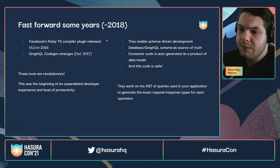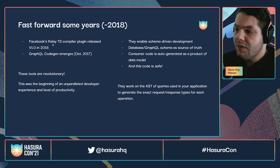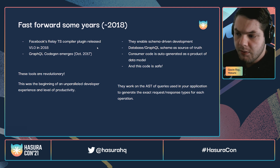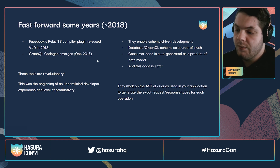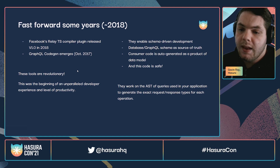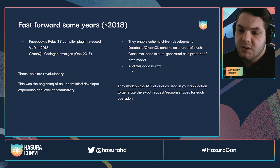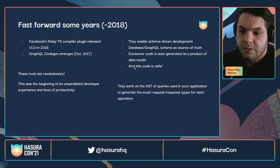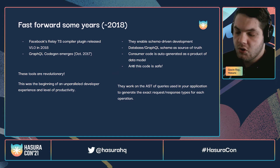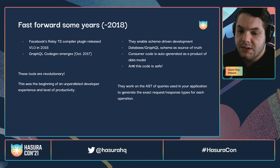Fast forward some years, and around 2018, Facebook has their Relay TS compiler plugin. We start to see GraphQL Code Gen emerge. And these tools are revolutionary because what they allow you to do is sort of develop schema-first or database model-first. So your database and your schema become the source of truth, and your client code is generated from that, which just reduces errors and increases developer productivity.